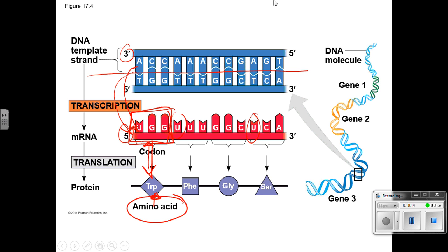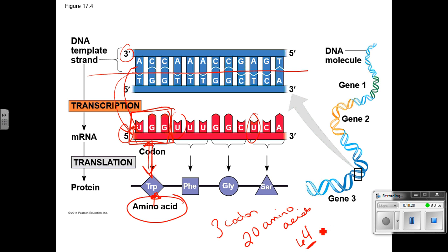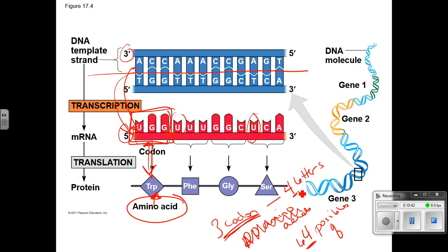Every three bases is a codon. There are four letters in the genetic alphabet and twenty possible amino acids. That gives us 64 possible codon combinations. Since there are only 20 amino acids but 64 combinations, some amino acids are going to have more than one codon assigned to them — you'll see that when you get to the chart.